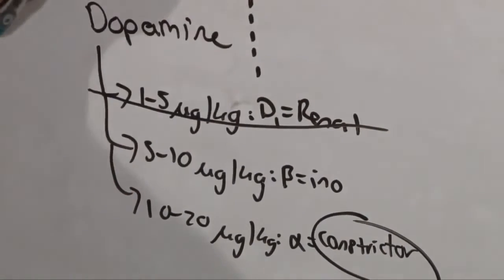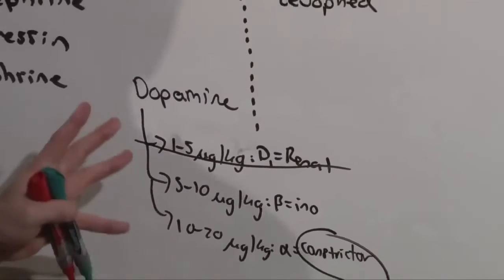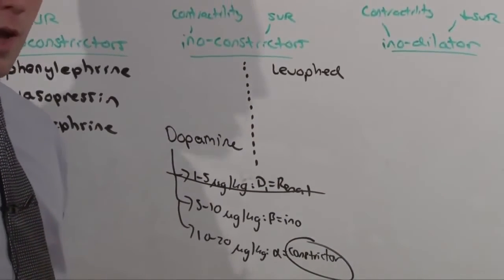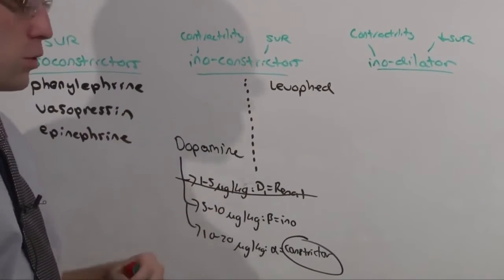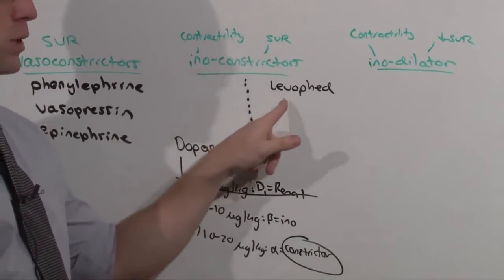Levophed has a little bit more inotropic activity. The nuances don't matter. They're discussed so that when someone comes back at you, and if you're using this model, you know what they're talking about. But in reality, dopamine equals levophed, except in the setting of sepsis.